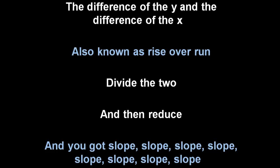Difference of the y and the difference of the x, also known as rise over run. Divide the two and then reduce, and you got slope, slope, slope, slope, slope.